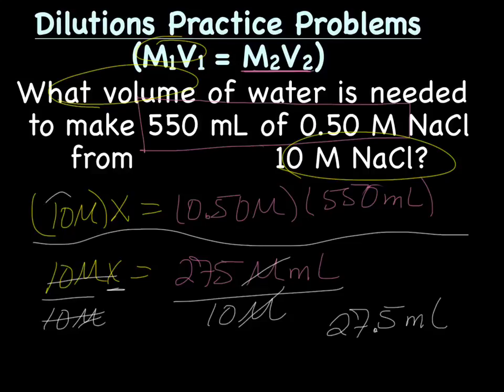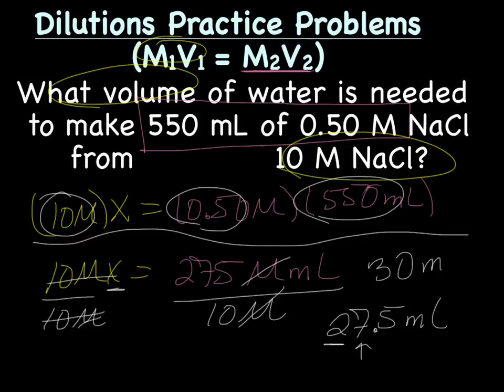And if we go back and look at sig figs, we have 1 and 2 and 2. So we're going to have 1 sig fig. So we're going to drop the 7, which is 5 or bigger, so that makes the 2 a 3. Because the 7 is before a decimal, we need a placeholder, so 30 milliliters. All right. That's it for today. Have a good one. Bye-bye.